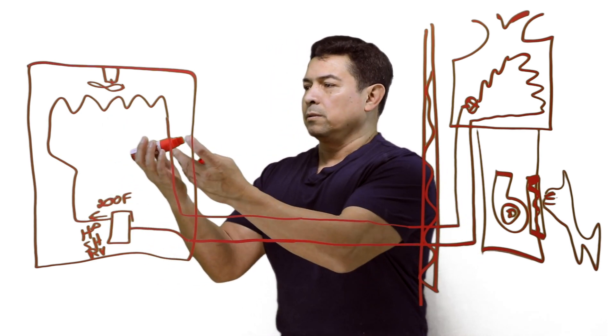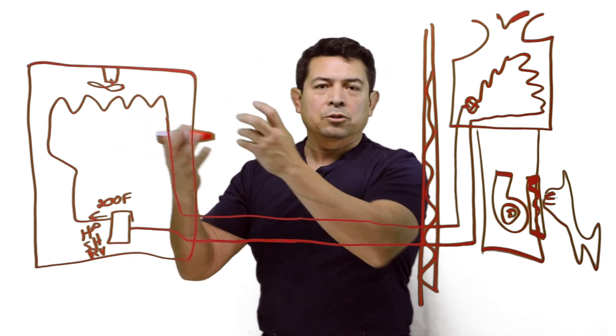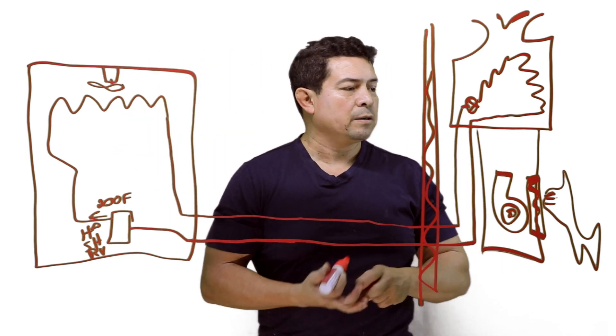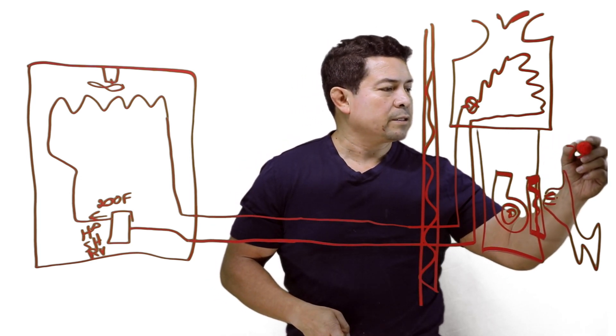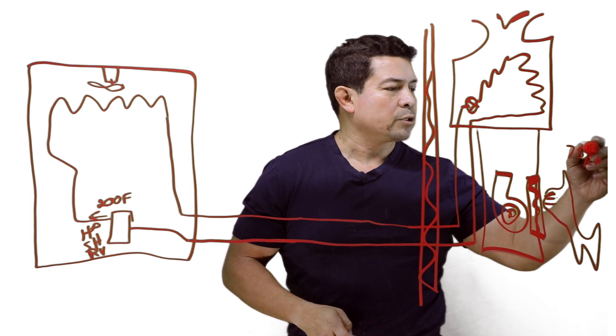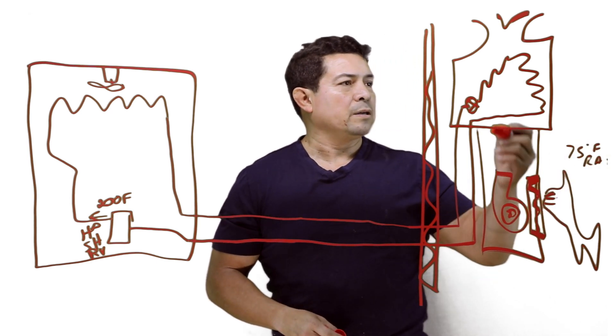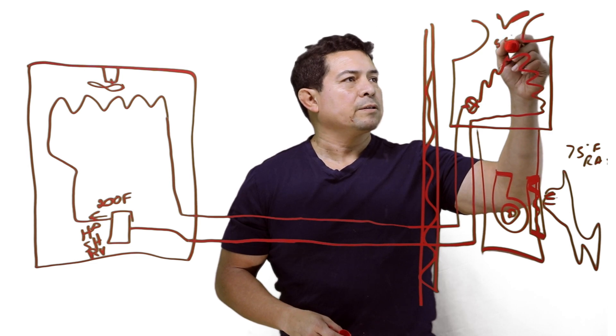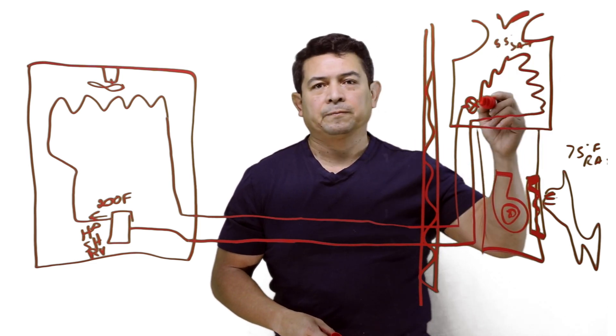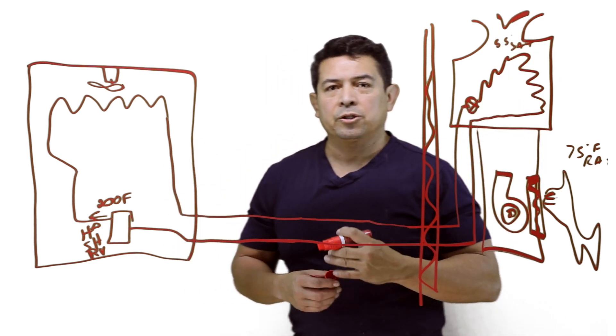It's going to give off the heat to the outside air, turn it into liquid, come in here, and we're going to have, let's say, 75 degrees return air temperature coming in here. And it's going to be going out around 55 degrees, your supply air temperature. So this is what's happening in your air conditioning system.